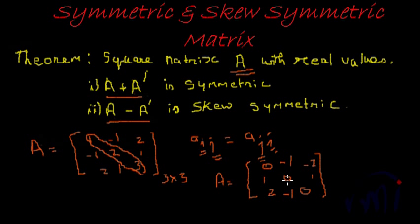So, what this theorem states is: given a matrix A of any n by n order, which is a square matrix, A plus A transpose will always be symmetric and A minus A transpose will be skew symmetric. Let us try and prove this.